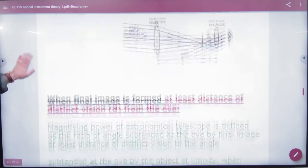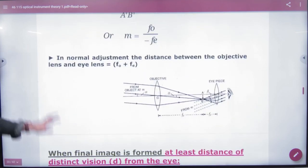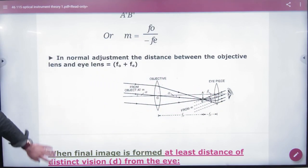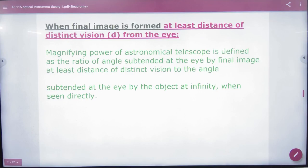So this is the result. And in normal adjustment, the length of telescope is Fe, F O plus Fe. This is the length.